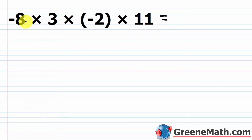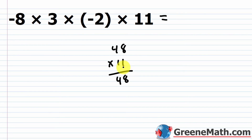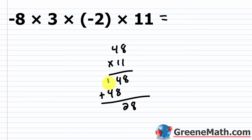Let's work through negative eight times three times negative two times eleven. Counting negative factors: one, two — that's two negative factors. Two is even, so the product is positive. Multiplying absolute values: eight times three is 24, times two is 48. Then 48 times 11: one times 48 is 48, plus 480 — adding gives 528. So the final answer is positive 528.